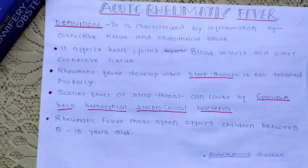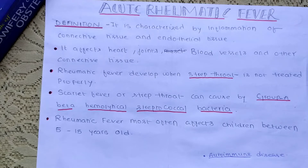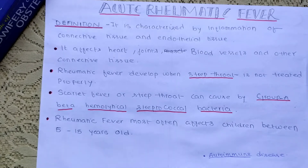Rheumatic fever is also an autoimmune disease. Autoimmune disease means that the immune system affects healthy cells. The immune system normally targets infection-causing bacteria, but in this case it affects the tissue of the heart, joints, skin, and CNS. As a result, the immune system reaction causes swelling of the tissue, such as inflammation.